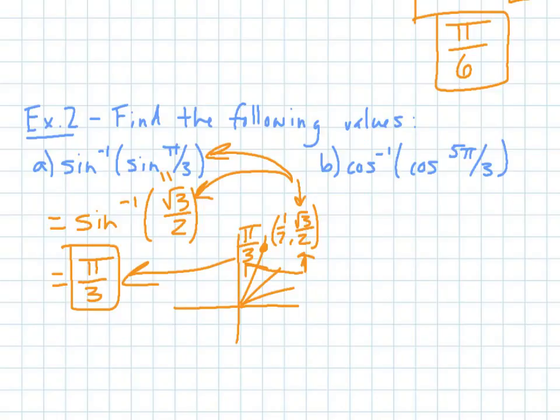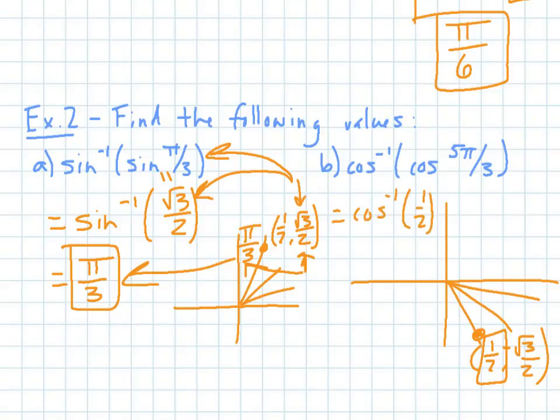Same thing for inverse cosine of cosine 5 pi over 3. Now, here, 5 pi over 3 is located in the fourth quadrant. My ratio is 1 half comma negative square root of 3 over 2. Now, here, my ratio is 1 half. So I'll insert that in.